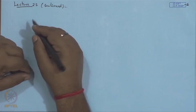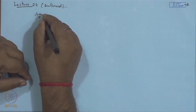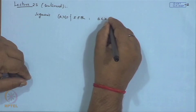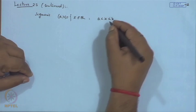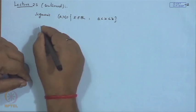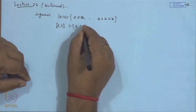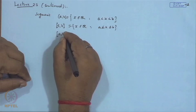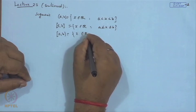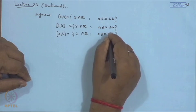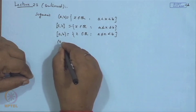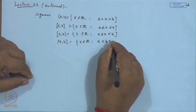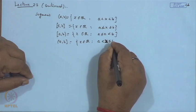Before going further, let us recall what is already known. The segment (a, b) means the set of all real numbers x such that a is strictly less than x less than b — this we call an open interval. The segment [a, b] means the set where a ≤ x ≤ b — this is the closed interval. These are the semi-closed intervals: {x ∈ R : a ≤ x < b} is left-bounded and right-open, and {x ∈ R : a < x ≤ b} is right-bounded and left-open.